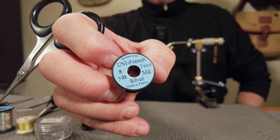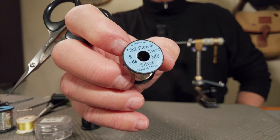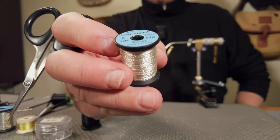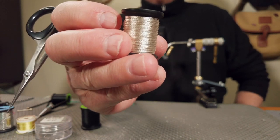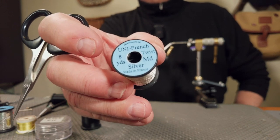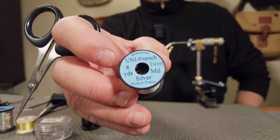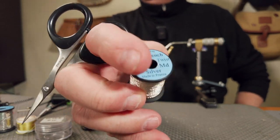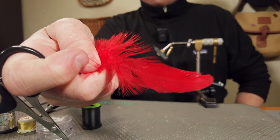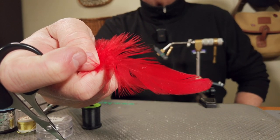The rib, several options on that. You can use Largarten flat braid or in this case I'm using the Uni French and it's a braid and I like the way that looks on the body of the fly. The tail is just a red hackle, a little softer red hackle.